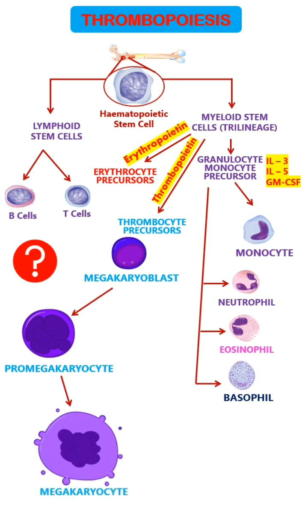Platelets are formed from pseudopods of megakaryocyte cytoplasm. One megakaryocyte forms 4000 platelets.